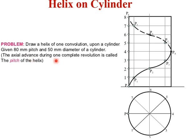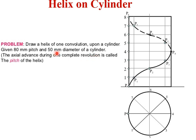Pitch is the axial advancement of the point along the surface of the cylinder in the axial direction, so that it comes again to that particular point but at some distance — that distance is the pitch. This is an important parameter when drawing a helix by the graphical method.